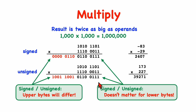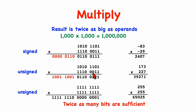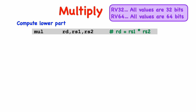It's always the case that the lower portion, the lower half of the result, will be the same, regardless of whether it's a signed or unsigned interpretation. But for the upper half of the result, the upper bytes can differ, as shown by this example. I also wanted to show an example where we're multiplying the two largest unsigned numbers, and this just shows that exactly twice as many bits will be sufficient for holding any possible result. So for multiplication, the number of bits required for the result is twice as many as the number of bits for the operands.